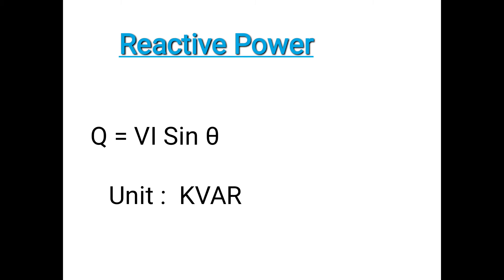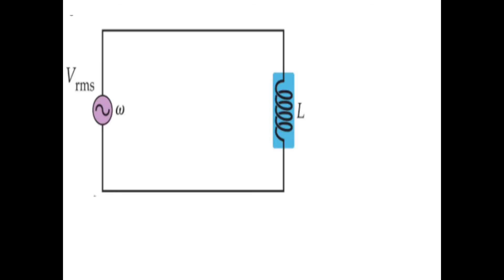Reactive power is always denoted by Q. The formula of reactive power is Q = V × I × sine theta. The unit is KVAR — kilo volt ampere reactive. In this circuit we use the load, which is an inductor.